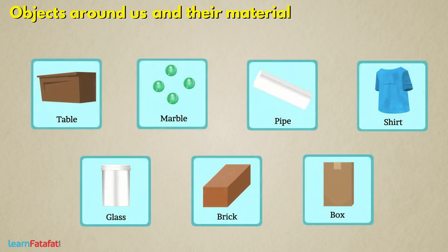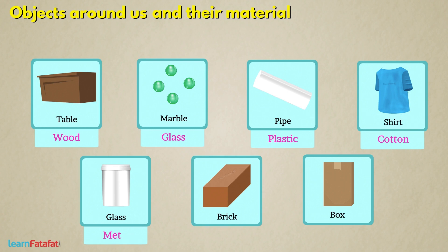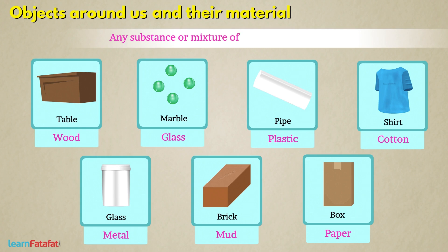A material is a thing such as wood, glass, plastic, cotton, metals, mud, paper, etc., from which an object can be formed. In general, any substance or mixture of substances which has mass and volume is called a material.